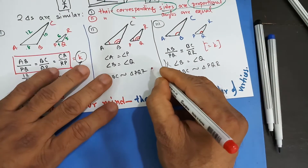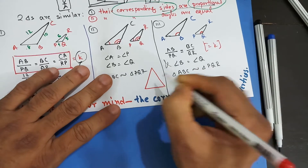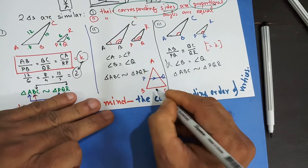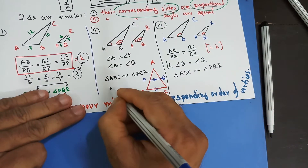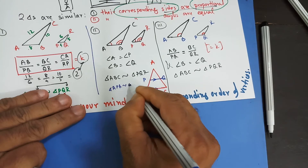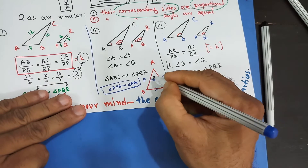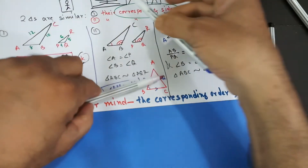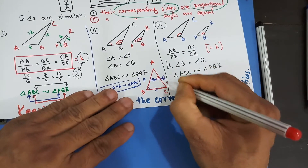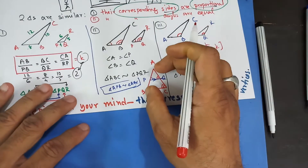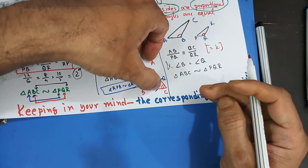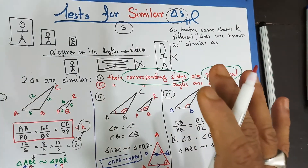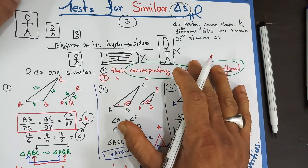A very common diagram you will see is a triangle ABC with a parallel line PQ drawn inside it. As soon as PQ is parallel to BC, you can say triangle APQ is similar to triangle ABC, because the corresponding angles are equal — this angle equals this angle, and similarly for the other pair — and the third angle at A is common to both triangles. That was the test of similarities. Thank you for watching — if you have any questions, write to me. Take care and have a good day.